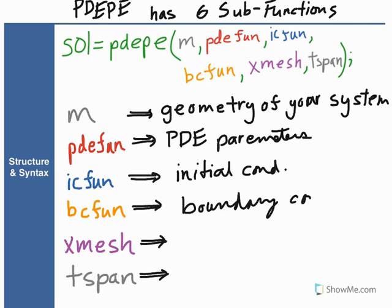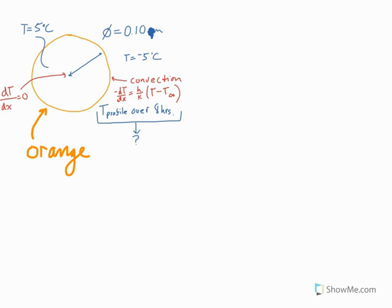Xmesh is where we have to go back to our system and figure out what distance we care about. And Tspan, that's the time span—over what period of time do we want to see a change in temperature, concentration, etc.